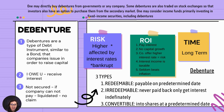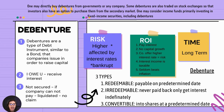It's not secured. The only risk with a debenture is that if the company cannot pay you back — for example, they are liquidated, they go under — you have no claim for a debenture. One may directly buy debentures from government or any company. Some debentures are also traded on stock exchanges so that investors have an option to purchase from the secondary market. The risk is higher because it could be affected by interest rates and what the company is able to offer you. Do your homework on the company because if the company goes bankrupt, you have no claim to it.